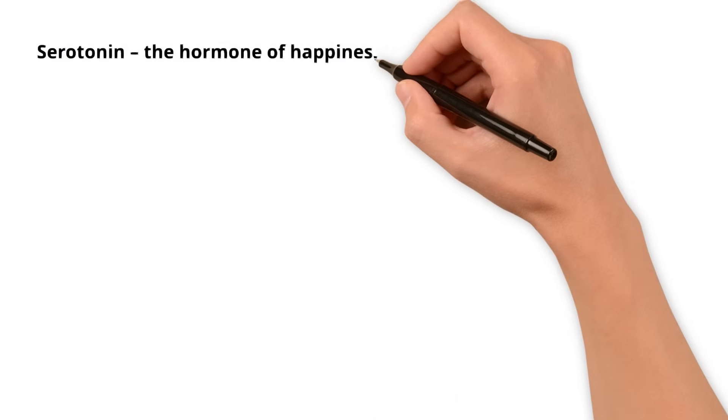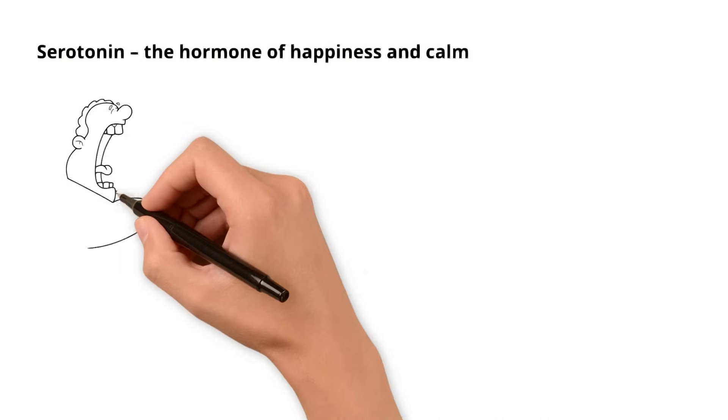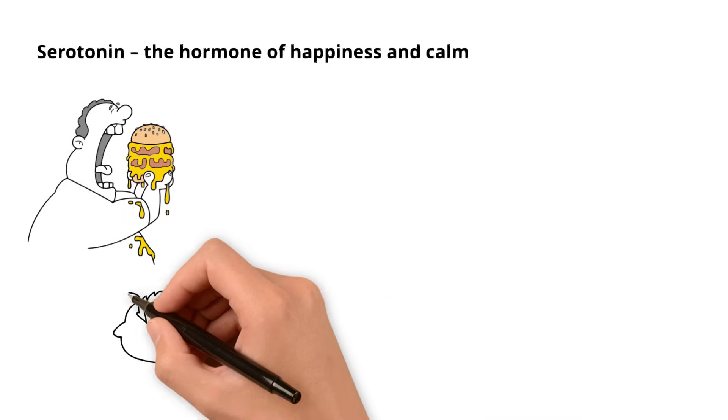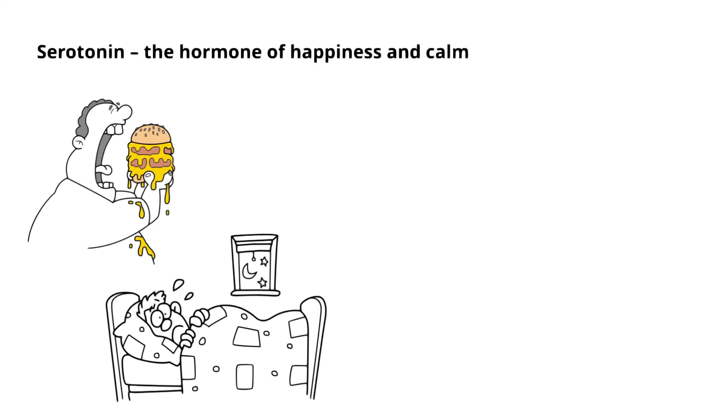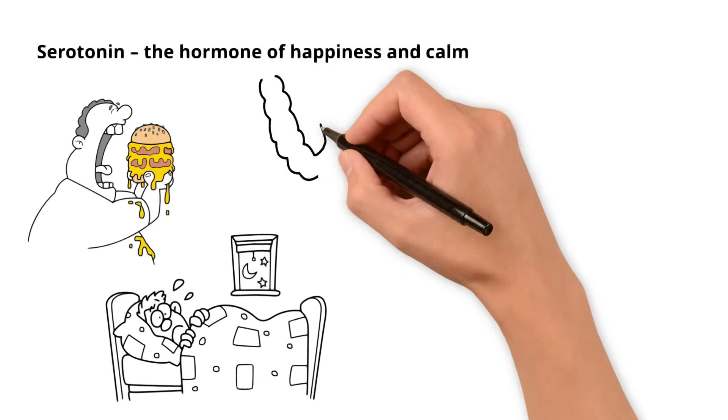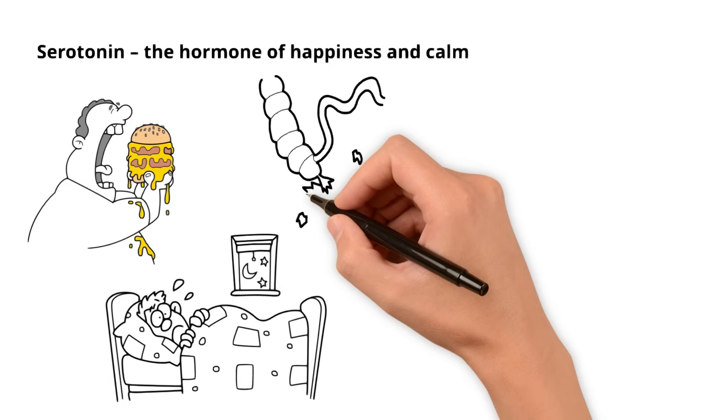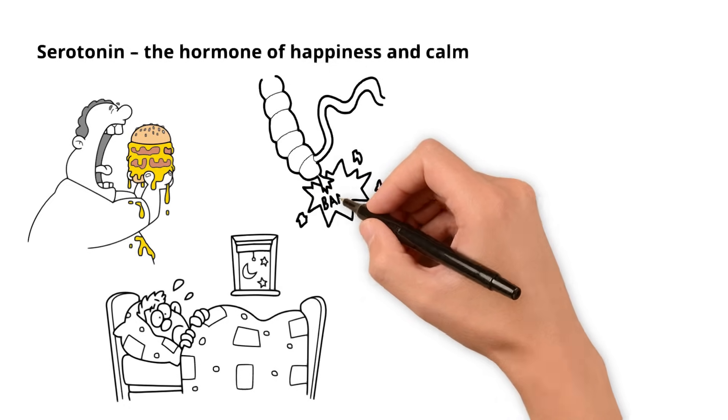Serotonin, the Hormone of Happiness and Calm. This hormone regulates not only your mood, but also appetite, sleep, and even gut functions. Researchers at Oxford University discovered that 90% of serotonin is produced in the gut, and its levels are directly influenced by your diet.